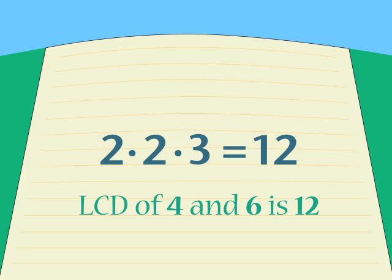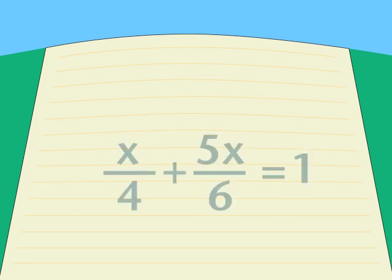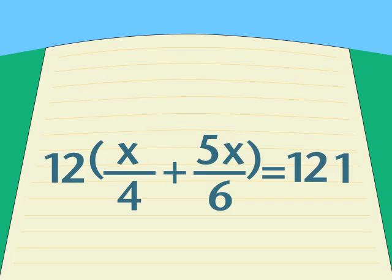If you need more review on factors, dig out your old arithmetic book before we go any farther. Now we're ready to deal with x over 4 and 5x over 6. We can solve the equation if we can just get rid of those fractions. How? By using that magic number, our lowest common denominator, 12. We multiply both sides of the equation by 12.